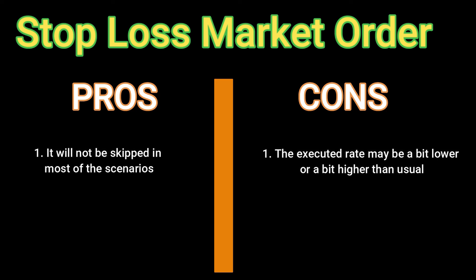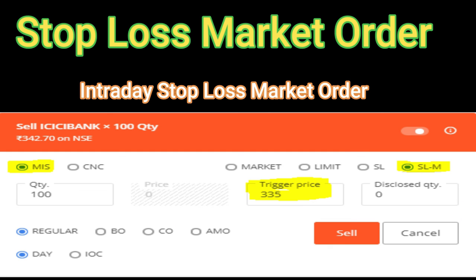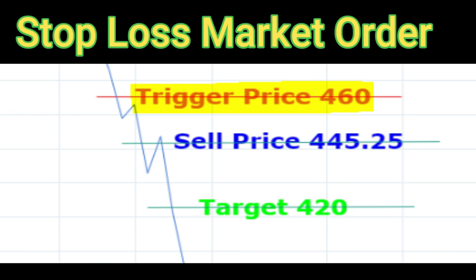How does it look in the Kite application of Zerodha? Intraday SLM (stop-loss market): ICICI Bank is trading at 342.70 and 335 is the stop-loss trigger. The moment it comes down to 335, a market order will be placed. For example, if you have sold a share at 445.25 with a target of 420 and stop-loss trigger at 460, the moment it goes up to 460 a market order is placed. It may be executed at 460, 461, 462, 465, or 470.